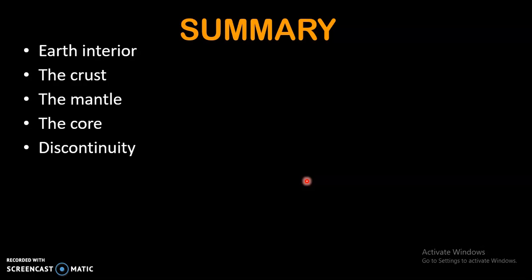The boundary which separates the sial and sima is called Conrad discontinuity. The mantle is the middle layer of the earth, which is again divided into two layers: upper mantle and lower mantle. The upper mantle contains the asthenosphere, which is also called the magma chamber because magma is originated and generated in it.